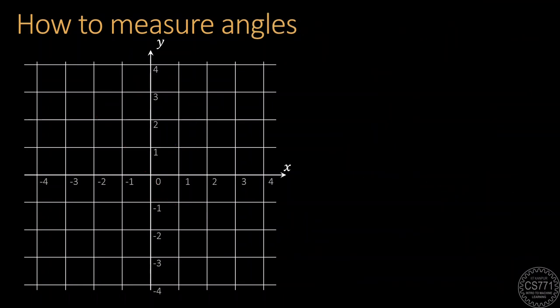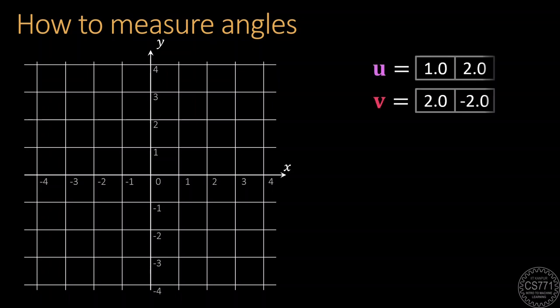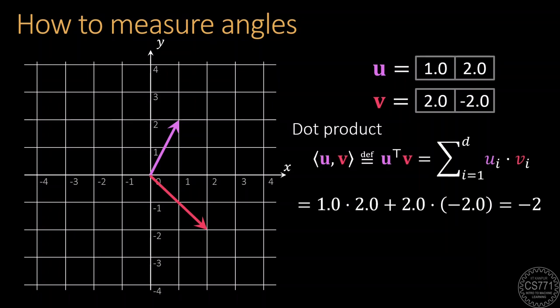From measuring lengths and distances, we now move on to measuring angles between two vectors. To help us do this, we need what is called the dot product. Given two vectors, their dot product is a real number, which could be positive or negative or even zero, that is found by simply multiplying the coordinate values and summing up these products. This trick works in any number of dimensions. Just like with vector addition, the dot product makes sense only if the two vectors are of the same dimensionality.